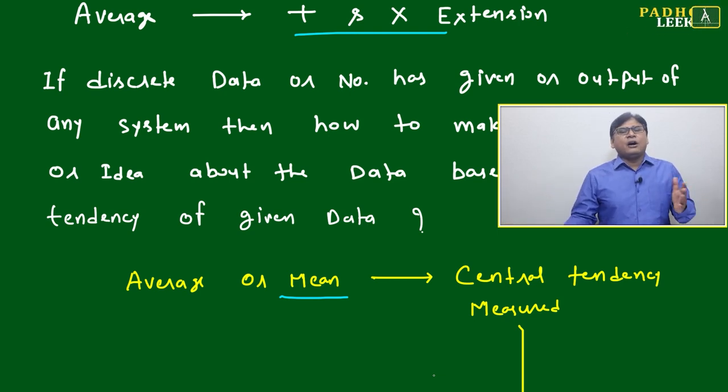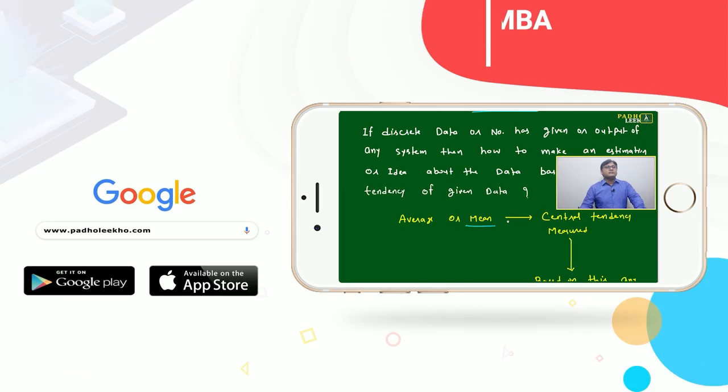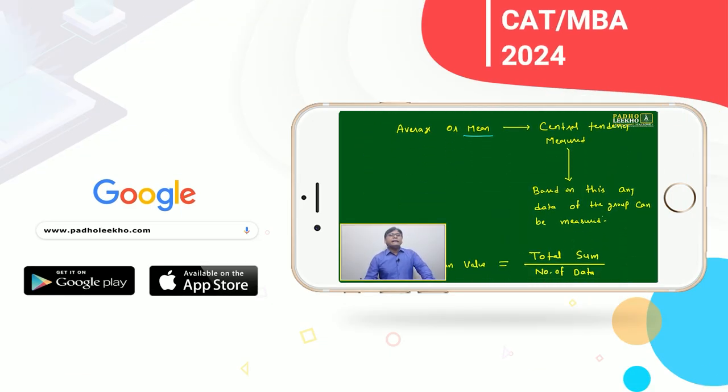Average or mean is a central tendency measure. Based on this, any data of the group can be measured - central data will be measured, and based on that you will be able to measure the deviation.